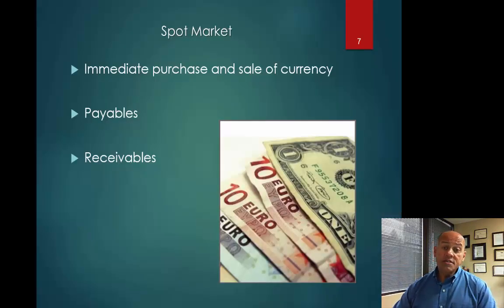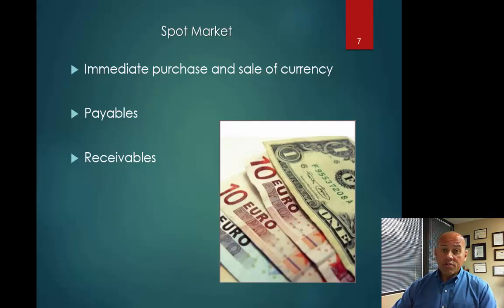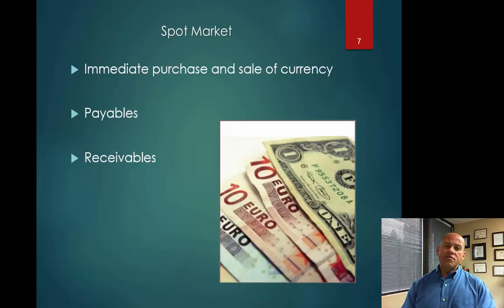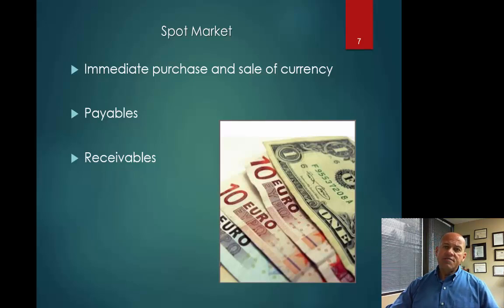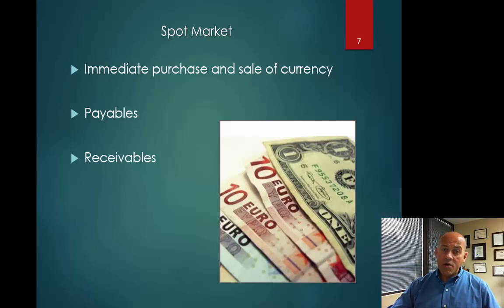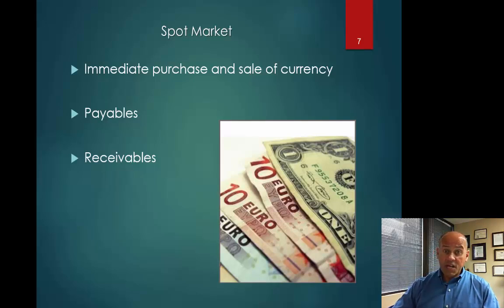One way to buy currency is on the spot market. If you quoted a transaction in foreign currency and the buyer pays you in that foreign currency, you then convert it to your home currency on the spot market. You might also use it for payables and receivables in an overseas subsidiary. The disadvantage is you get whatever the currency is valued at that moment, so if the currency fluctuates from one day or one period to the next, that can affect your overall costs.